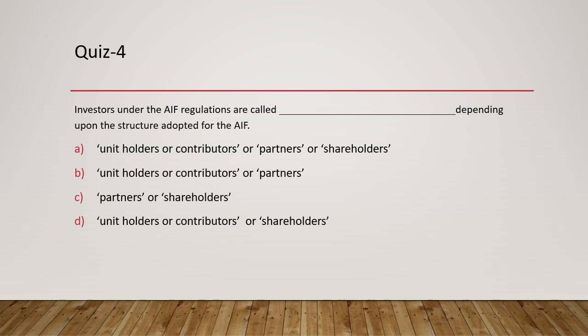Question four asks: investors under AIF regulations are called what? Unlike mutual funds where investors are called unit holders, AIFs use different terminology. The options include unit holders, contributors, partners, or shareholders. The answer is all of the above — they can be called by any of these four names depending on the structure.